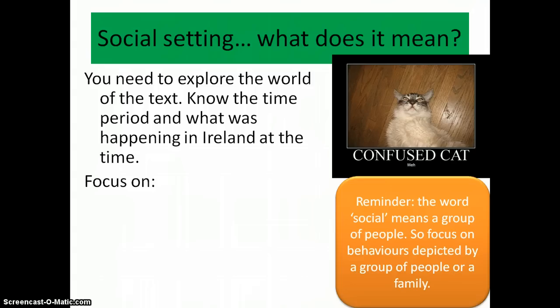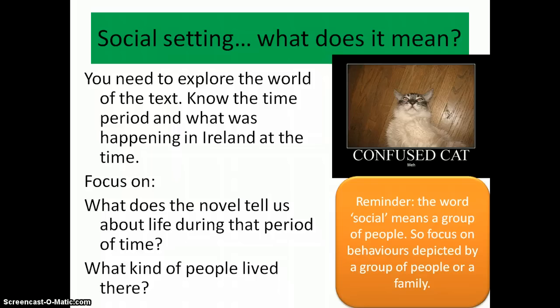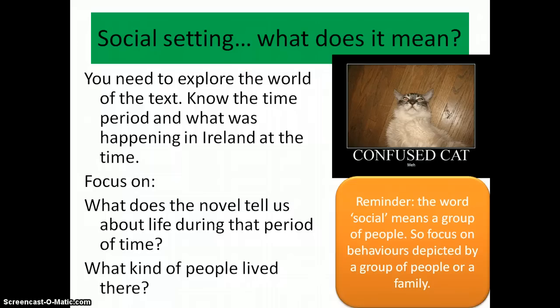I would particularly look at a congregation of people or a family — for example, Jack's mother. When you think about social setting, focus on questions such as: what does the novel tell us about life during that period of time? What is it showing us? And what kind of people live there? Because once you look at the period of time, what life is like, and the people, you can put everything else together.